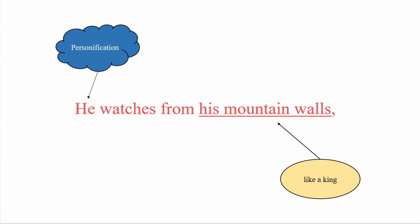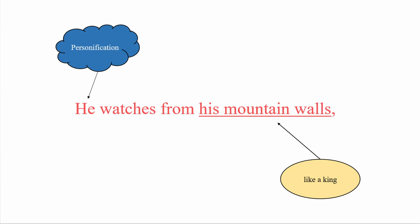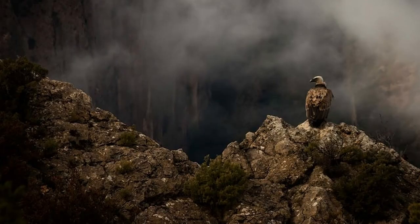'He watches from his mountain walls.' This is also personification. From his mountain walls — like a king surveying his kingdom from his royal capital, this eagle stands on the rock face and looks around with great pride and majesty.